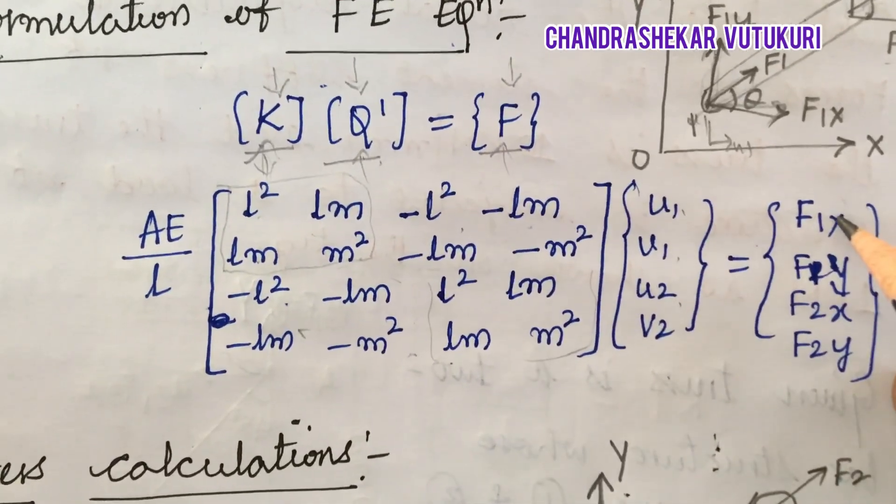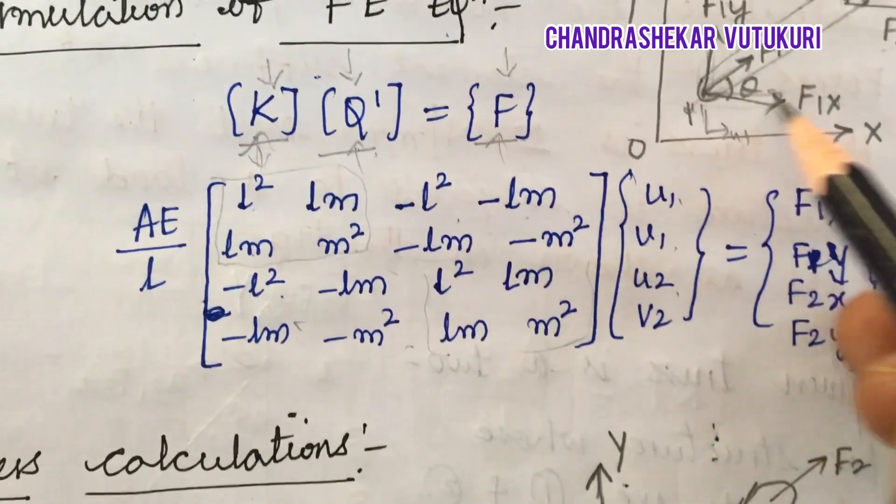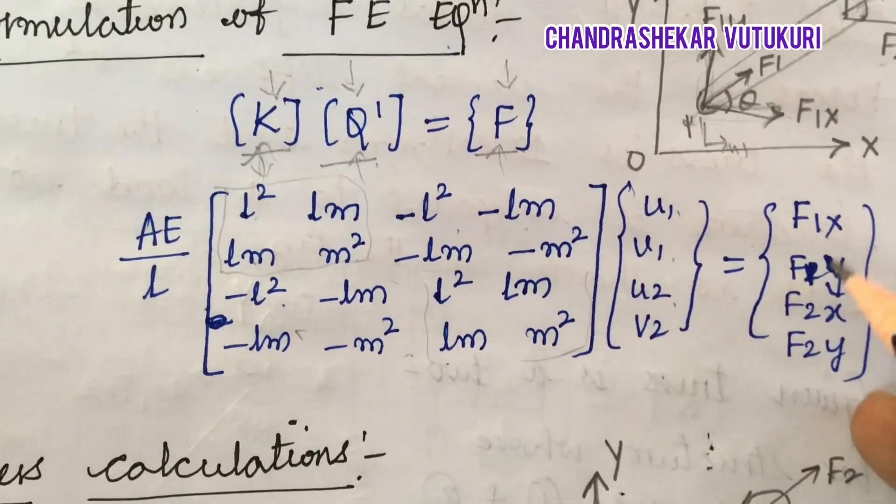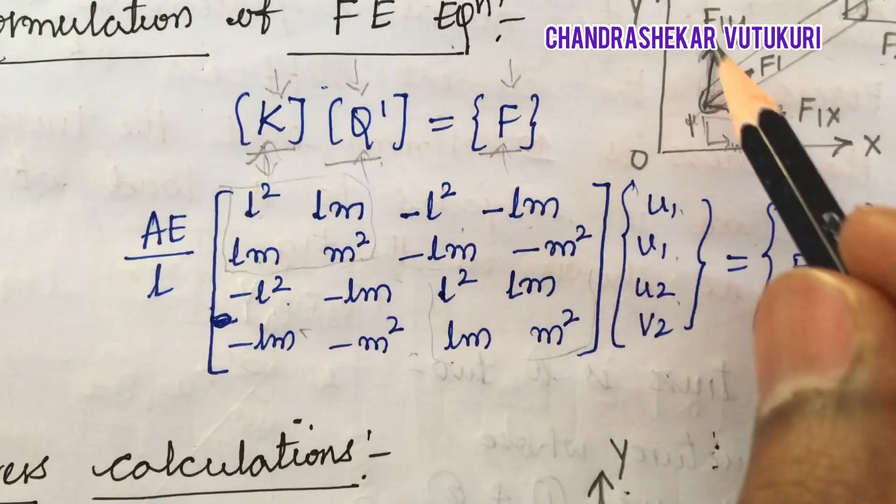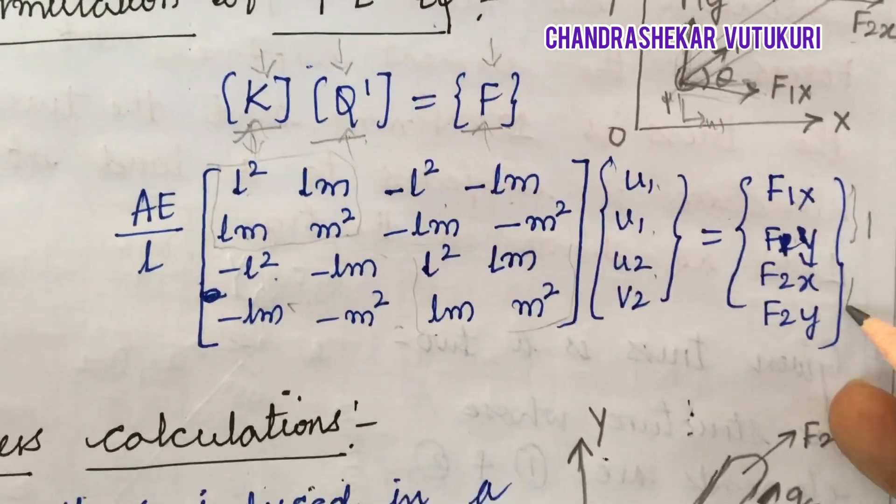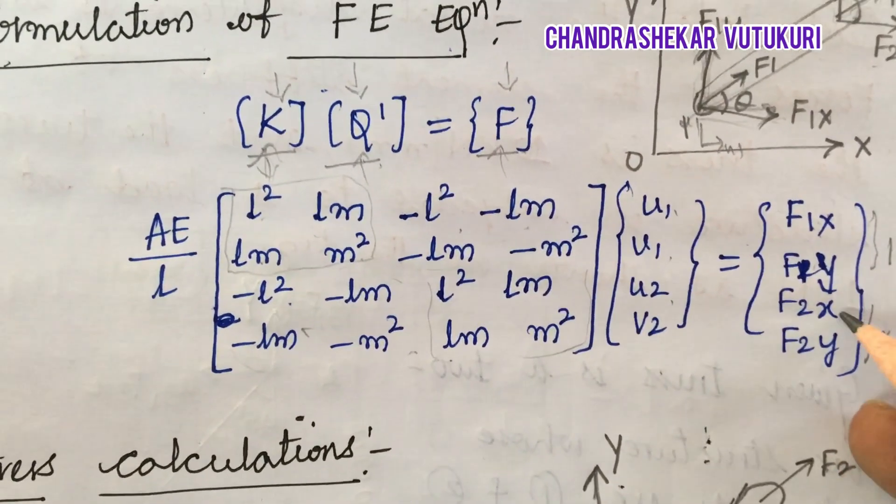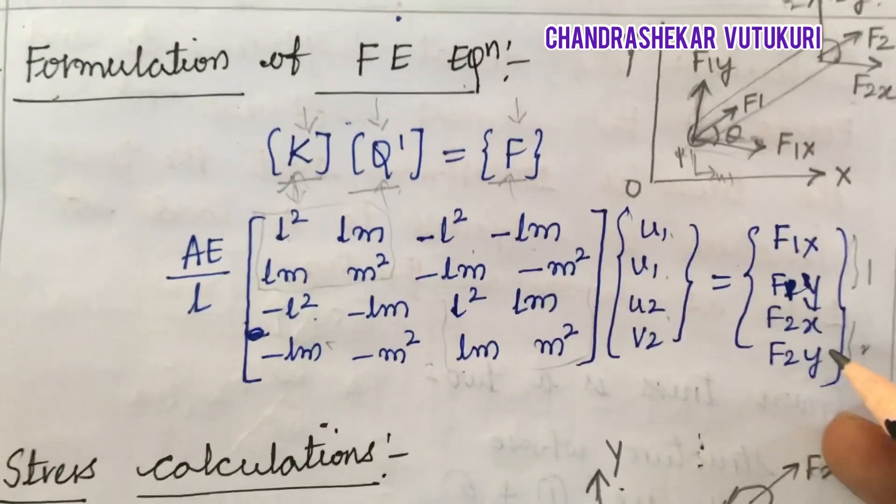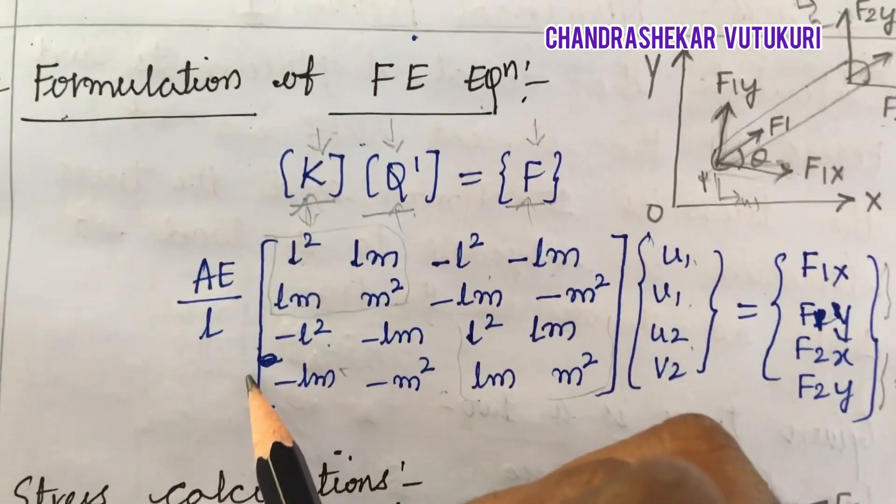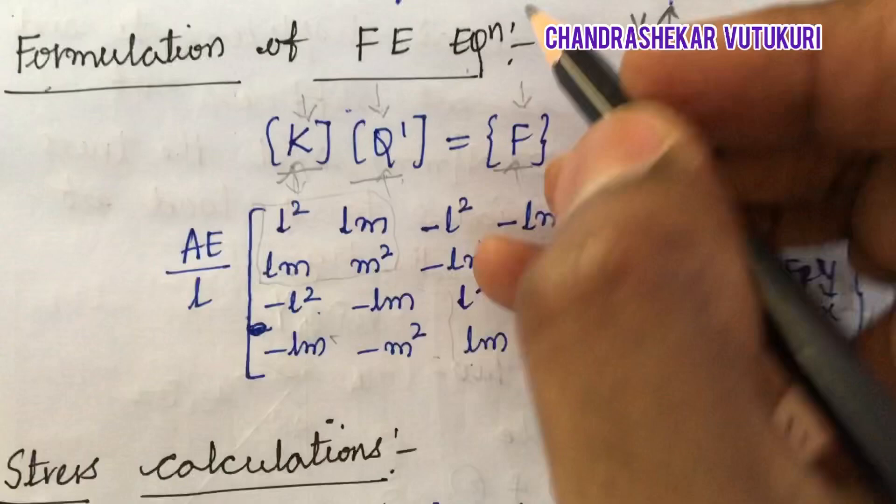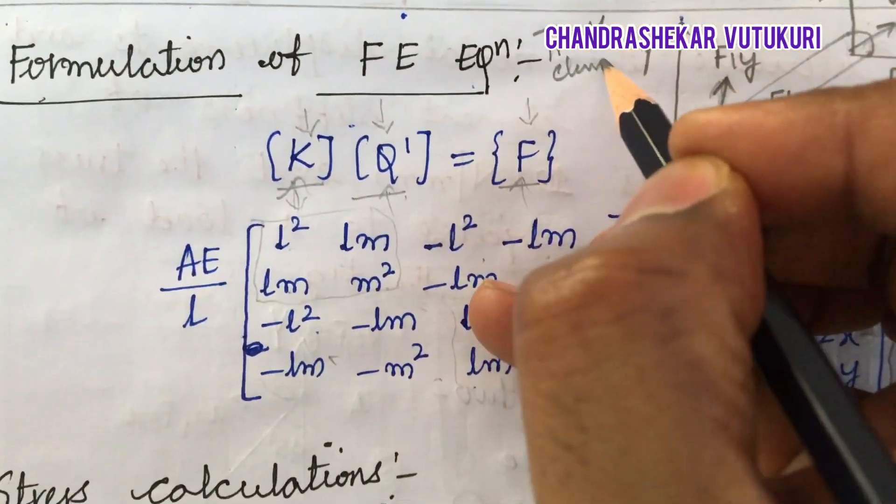What are the force vector or the load vectors? They are F1X, F1Y at node 1 and F2X and F2Y at node 2. This is all about the formulation of the finite element equation for a truss element dear students.